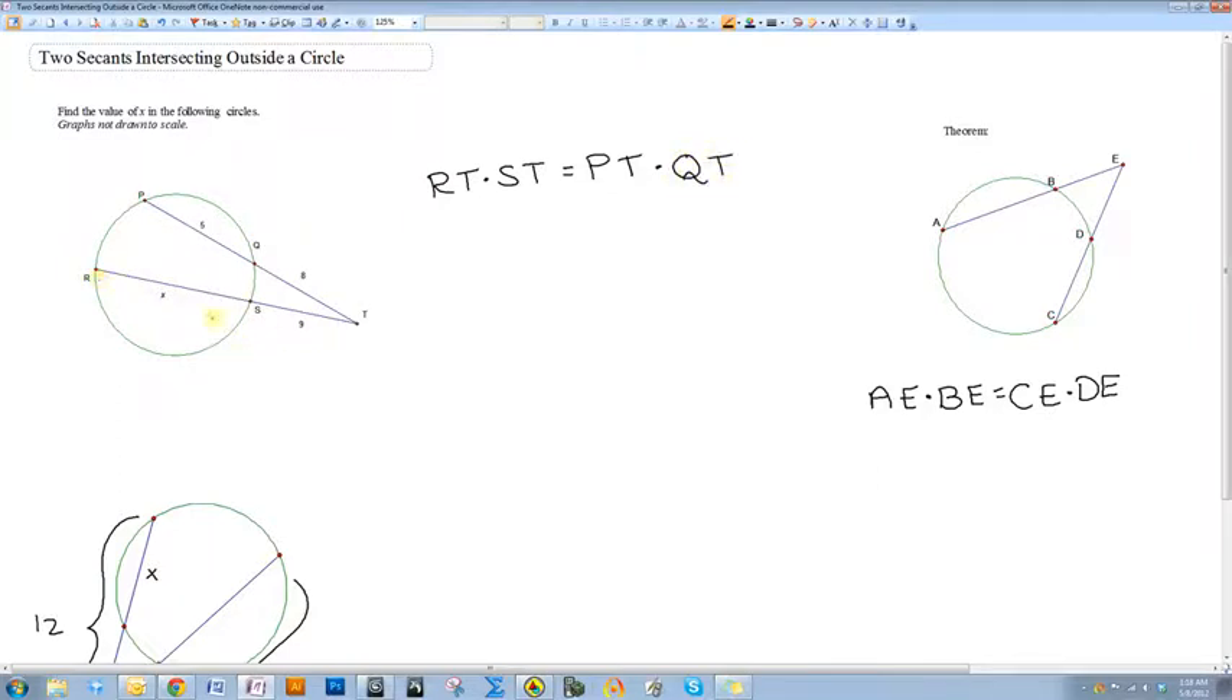RT is x plus 9. So, x plus 9 times 9. PT is 5 plus 8, so PT is 13. And QT is 8.